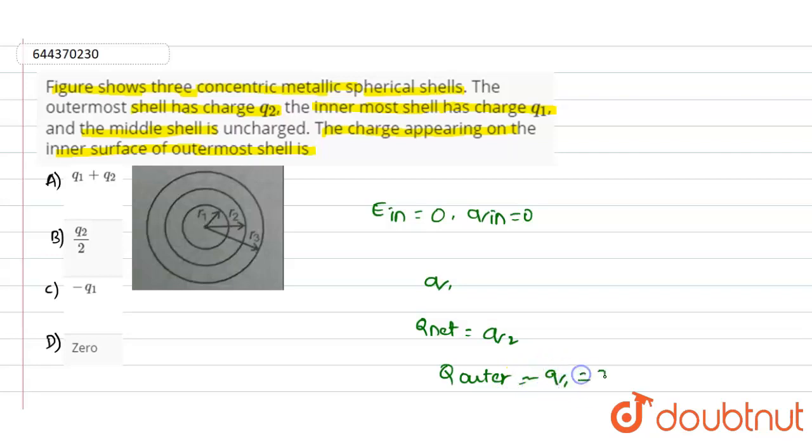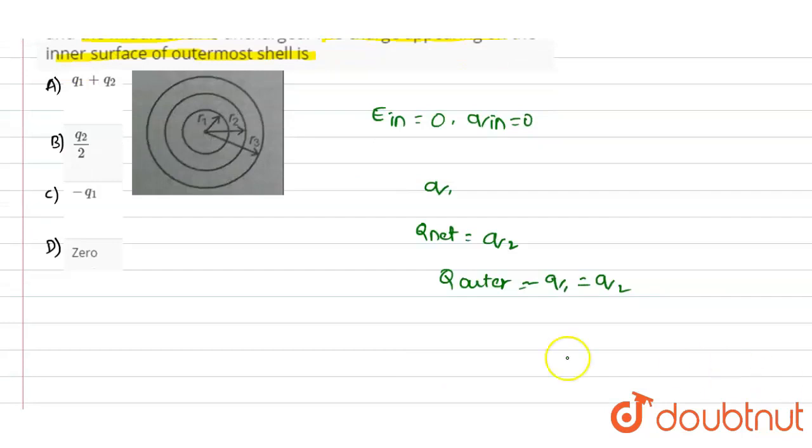So we have -q1 equals q2. In that case, we write q_outer, that means charge on outer surface, will be equals to q1 plus q2. So this is the value. Out of these four options, if you see, option A is q1 plus q2. Option A is the correct answer for this question. Thank you.